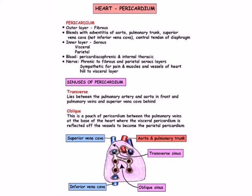The pericardium holds and protects the heart while providing enough potential space for filling and emptying of the chambers. The outer layer is the tough fibrous pericardium, which blends with the adventitia of the aorta, the pulmonary trunk, and the superior vena cava above, and the central tendon of the diaphragm below. Within this fibrous pericardium are two further layers of serous pericardium: a visceral layer lining the heart itself and a parietal layer lining the inner surface of the fibrous pericardium. These two layers are continuous with each other as they reflect off the major vessels behind and above the heart.